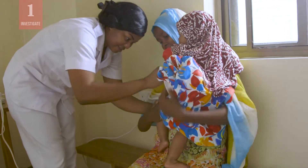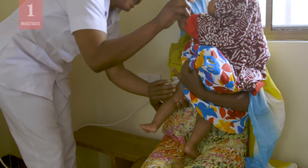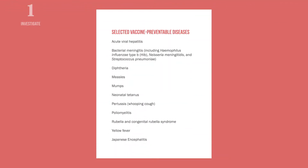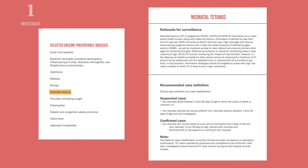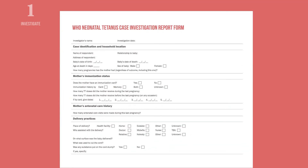First, how do you know if a disease you encounter requires immediate investigation? Your national guidelines should specify these diseases and provide a case definition for each. If you suspect or confirm one of these diseases, complete a case investigation report form. You should have access to a specific form for each disease that requires immediate investigation.